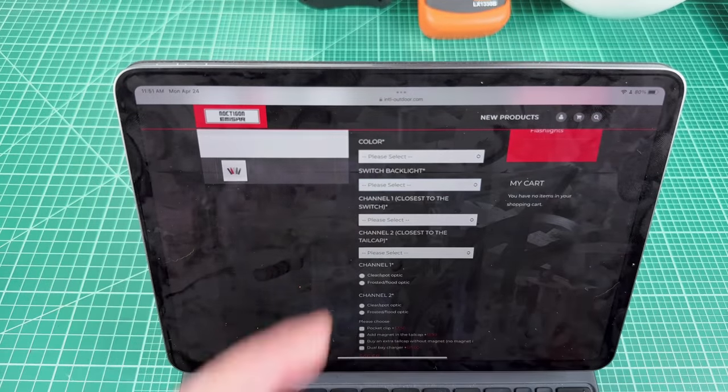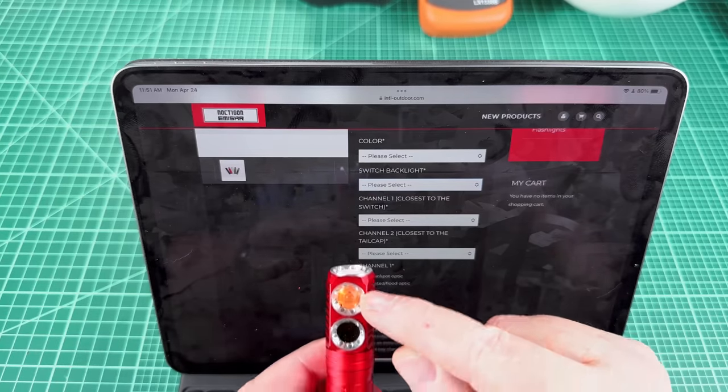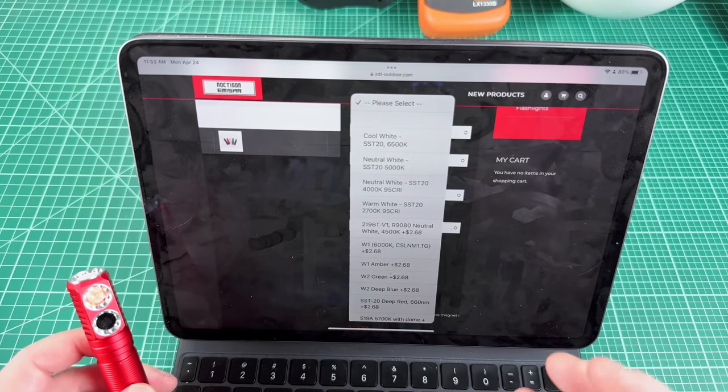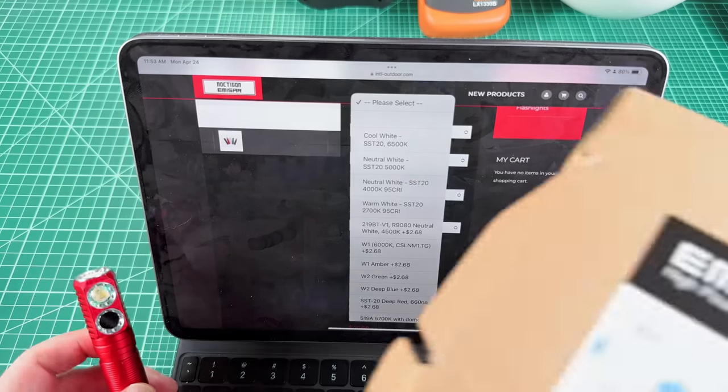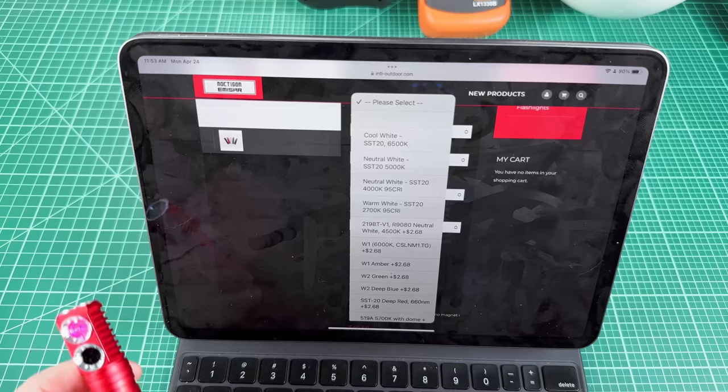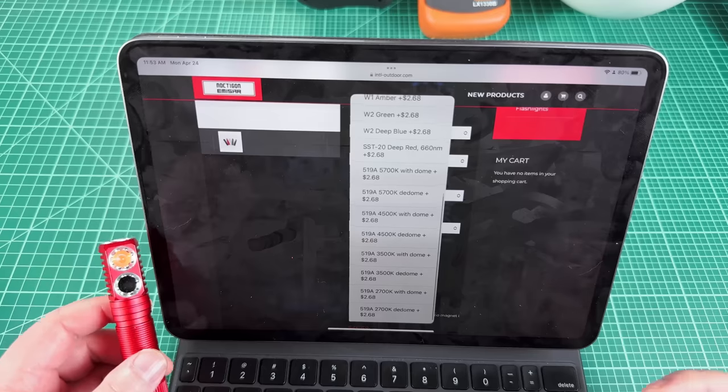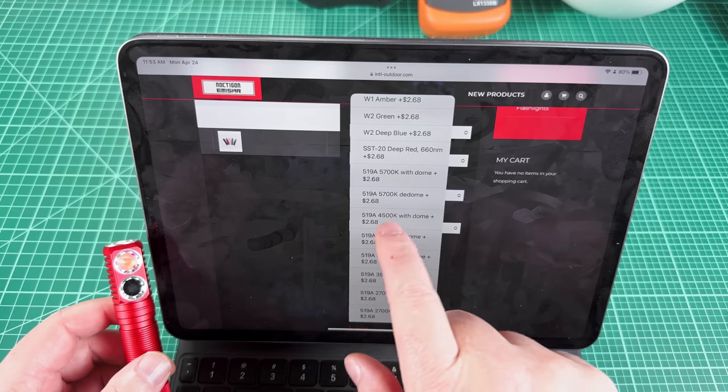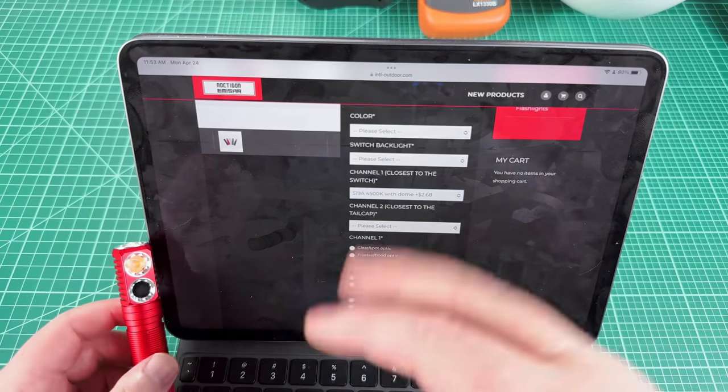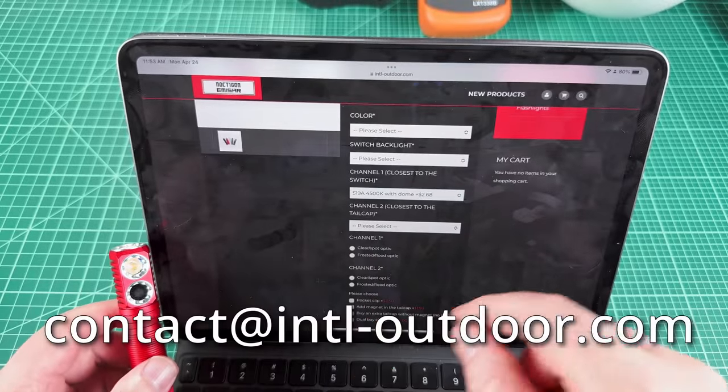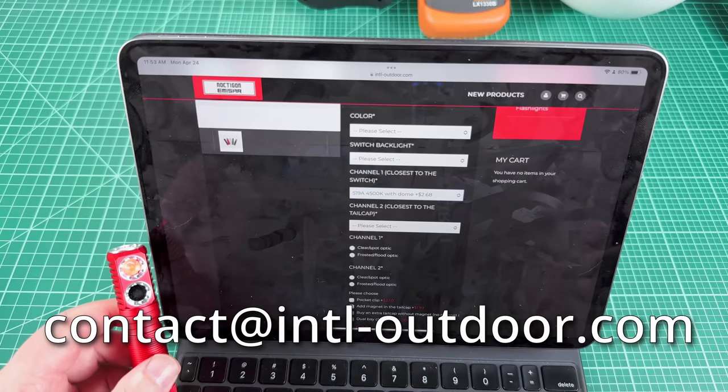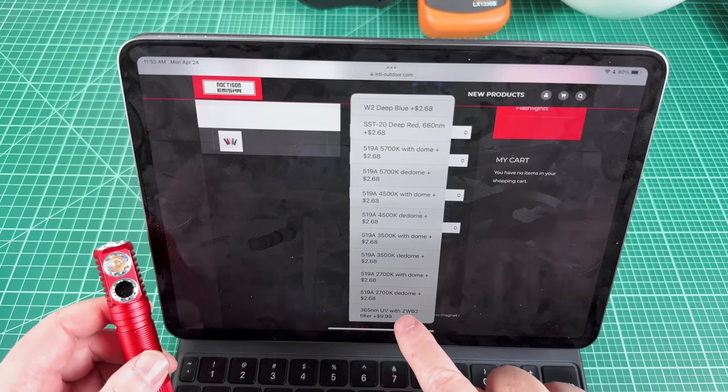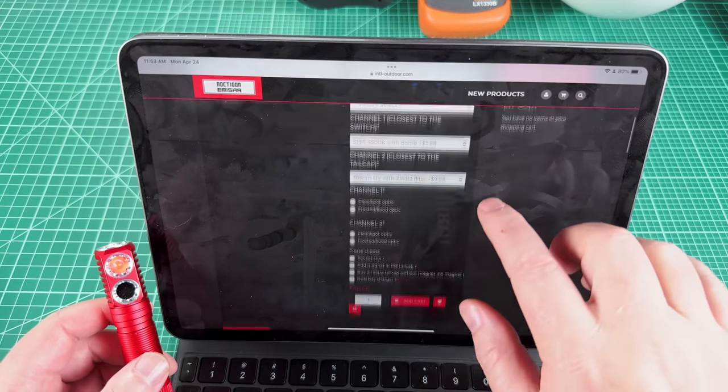Now, on channel one and channel two, he says closest to the switch or further from the switch. So this would be channel one right here. This is channel two. Now, on this pulldown, you have a bunch of different options for emitters. Mine is the 519A 4000, at least according to what I asked for and what he wrote on the box right there. But I don't see it on his list. So there's two options going on here. One option is that he has some 4,000 in stock. It's just not listed. So if you order something similar, like you order 4,500 with the dome, buy it. So pay for it and everything. Then send him an email at contact at intl-outdoor.com. And then just tell him you want the 4,000s instead. He'll just make that change. And then on the second option here, if you go all the bottom, you will see the UV with ZWB2 filter. Now, it costs an extra $10, but such an awesome thing. I'd get that.